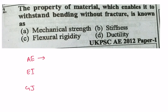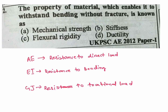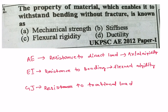AE is resistance to direct load — axial rigidity. EI is resistance to bending — flexural rigidity. GJ is resistance to torsional load — torsional rigidity.